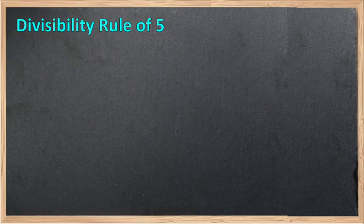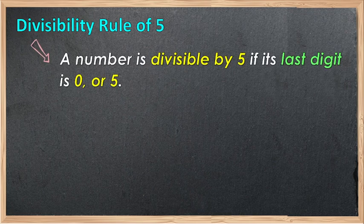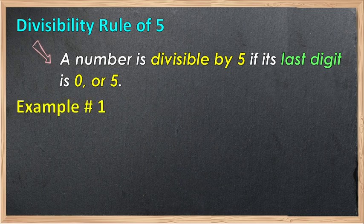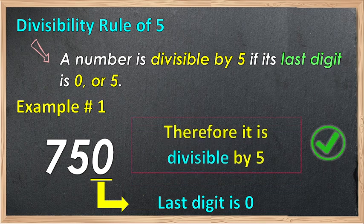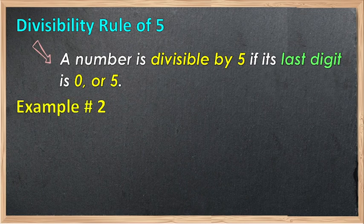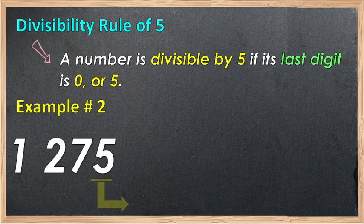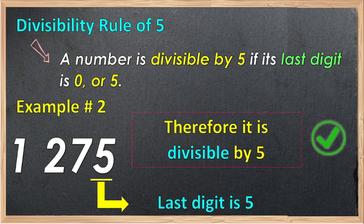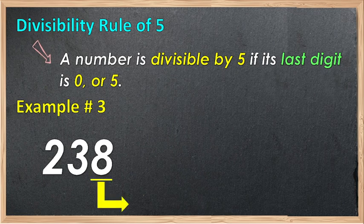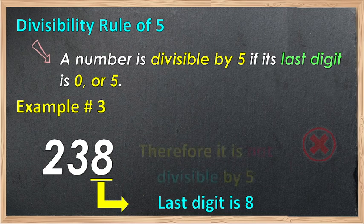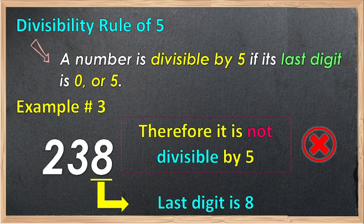Let's proceed to the divisibility rule of 5. A number is divisible by 5 if its last digit is 0 or 5. Let's have some examples. Example 1: 750. The last digit is 0. Therefore, it is divisible by 5. Example 2: 1,275. The last digit is 5. Therefore, it is divisible by 5. Example 3: 238. The last digit is 8. Therefore, not divisible by 5, because it does not end with 0 or 5.